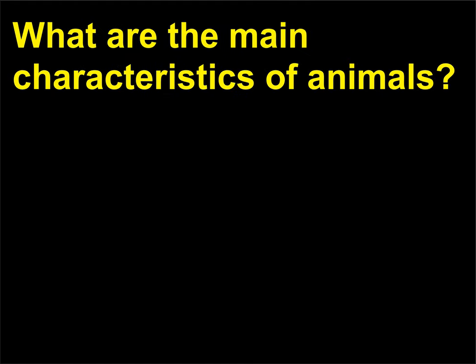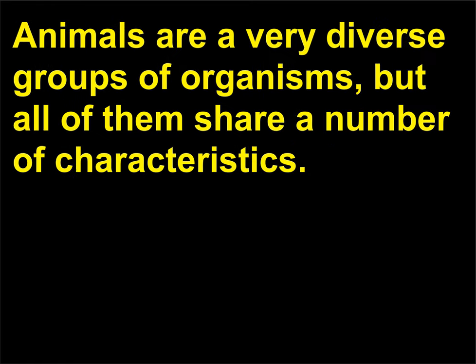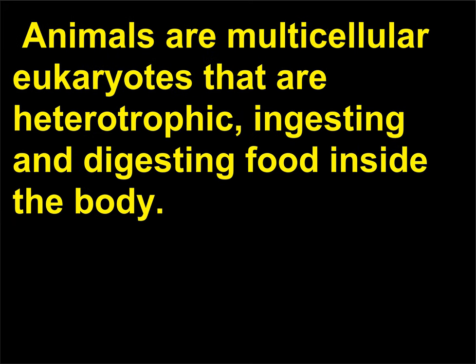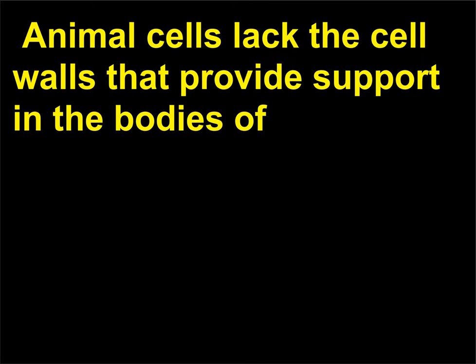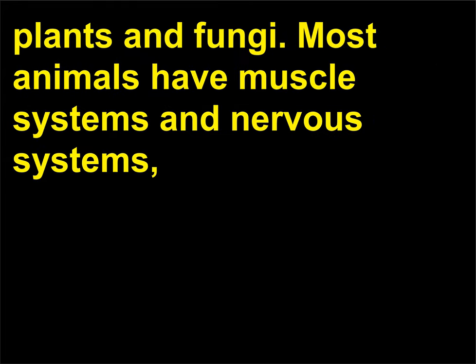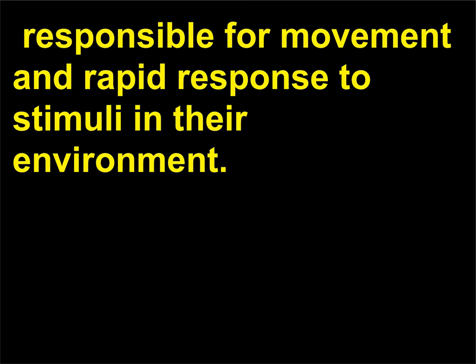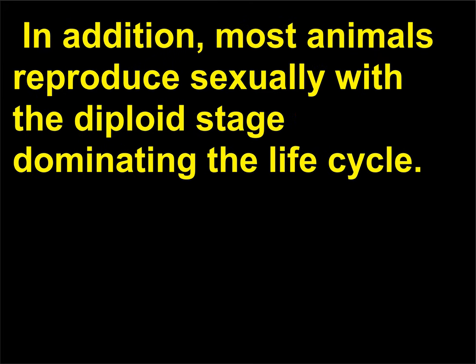What are the main characteristics of animals? Animals are a very diverse group of organisms, but all of them share a number of characteristics. Animals are multicellular eukaryotes that are heterotrophic, ingesting and digesting food inside the body. Animal cells lack the cell walls that provide support in the bodies of plants and fungi. Most animals have muscle systems and nervous systems responsible for movement and rapid response to stimuli in their environment. In addition, most animals reproduce sexually with the diploid stage dominating the life cycle.